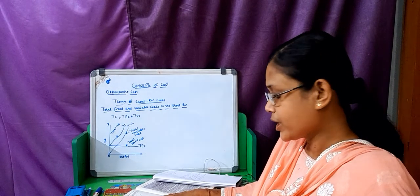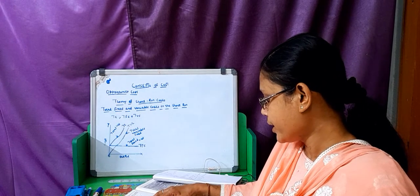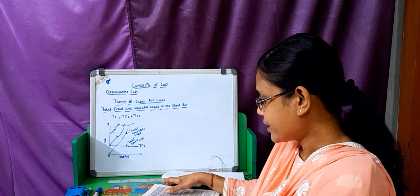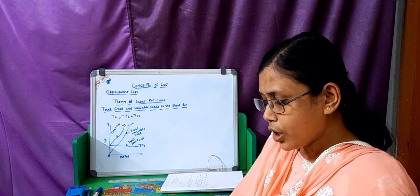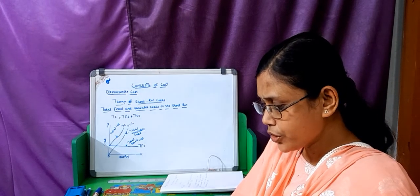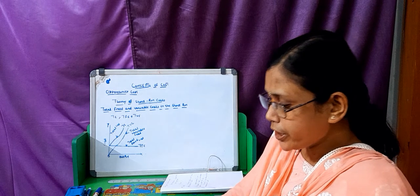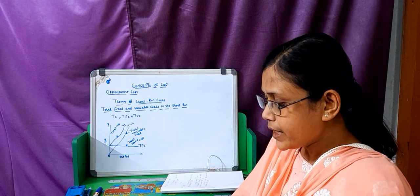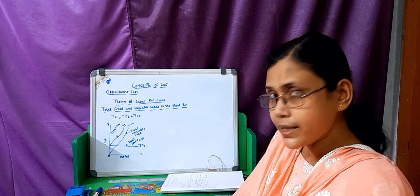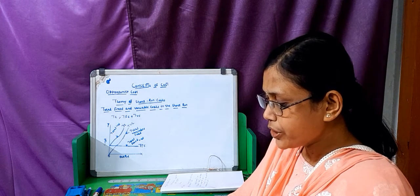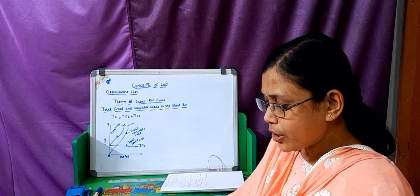What do we mean by opportunity cost? The opportunity cost of any good is the next best alternative good that is sacrificed. The factors which are used for the manufacture of armaments may also be used for the production of cars or other automobiles. Therefore, the opportunity cost of production of an armament is the output of cars and other automobiles forgone or sacrificed, which could have been produced with the same amount of factors that have gone into the making of an armament.